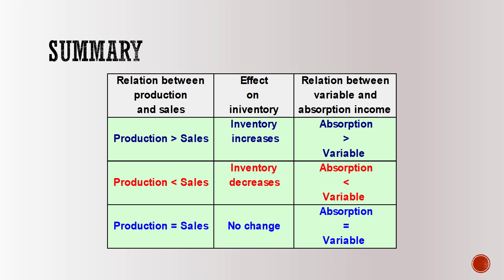If production and sales are equal, there will be no change in inventory and therefore no difference in income between absorption costing and variable costing.